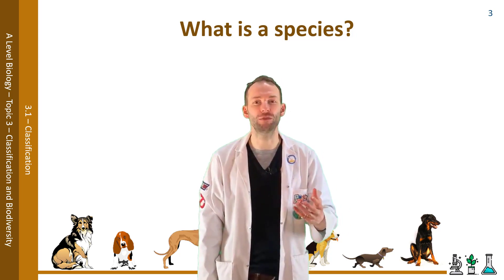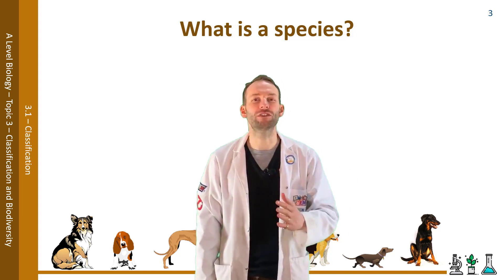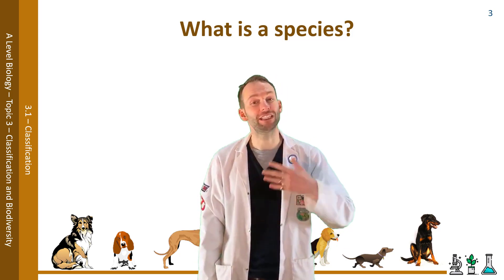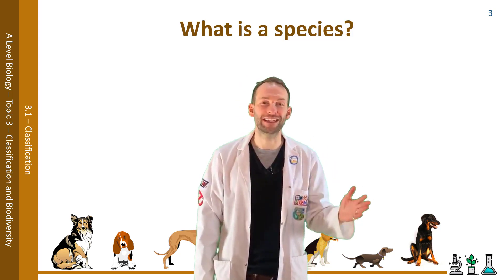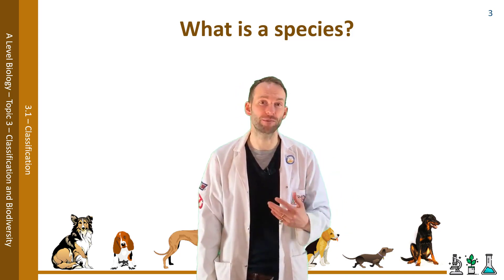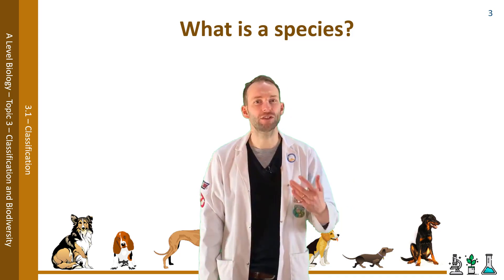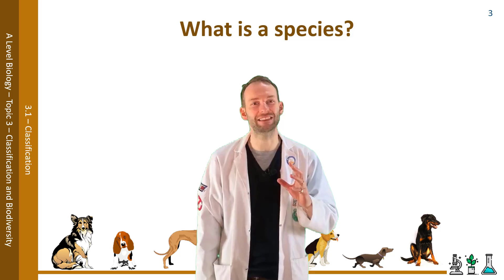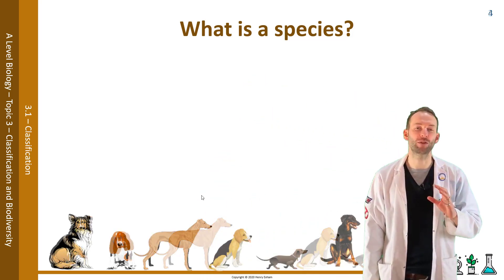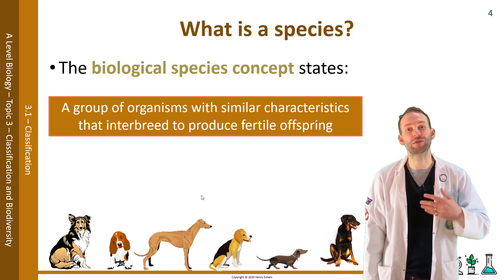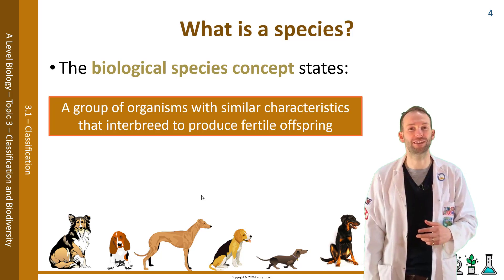If we look at these dogs, for example, they all look like separate species - they're very different, their morphology is very different. However, they're actually all variants or breeds of the same species, the dog. This is where we need to come up with what we define a species as. We can define it as the biological species concept: a group of organisms with similar characteristics that interbreed to produce fertile offspring.